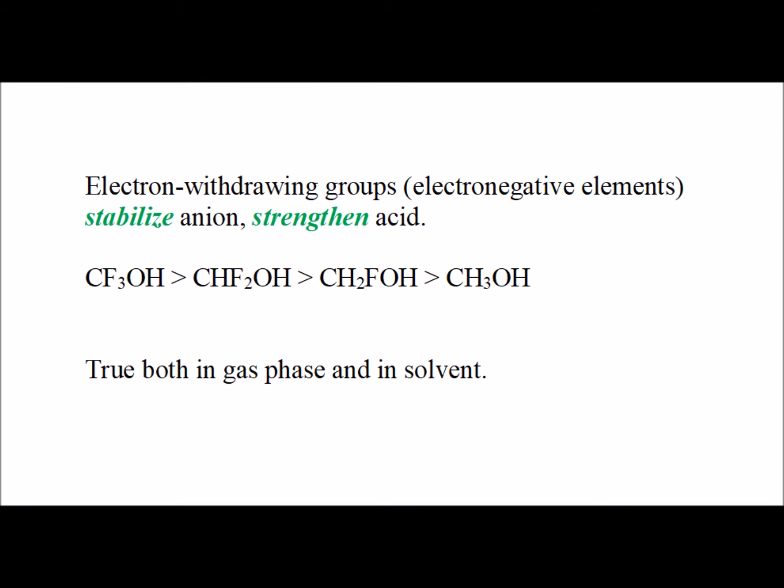This leads us to the general rule: electron-withdrawing groups, which include very electronegative elements like fluorine, oxygen, and chlorine, stabilize the anion — the conjugate base — thereby strengthening the acid. We see that the order of acidity confirms that trifluoromethanol is the strongest. Another parallel way to think of this is in terms of the energy of the lone pair on oxygen. The higher the energy of the lone pair, the stronger the base. The lower the energy of the lone pair, the weaker the base, and thereby the stronger the acid.